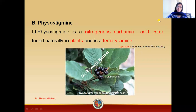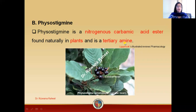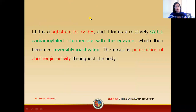Physostigmine is basically a nitrogenous carbamic acid ester found in plants. It is a tertiary amine, which means this drug has the ability to cross the blood-brain barrier and produce effects related to the CNS.